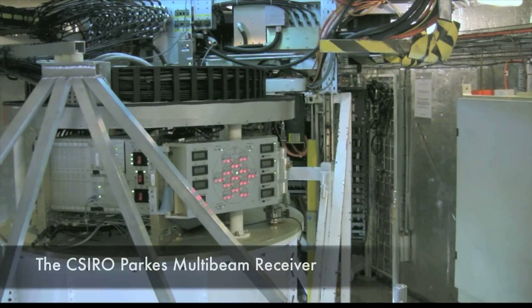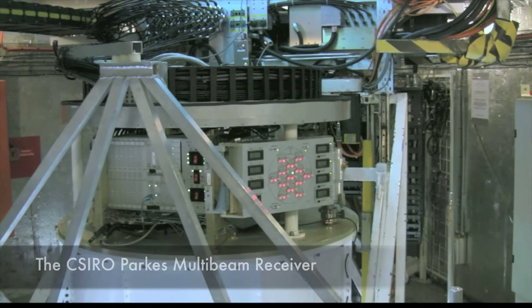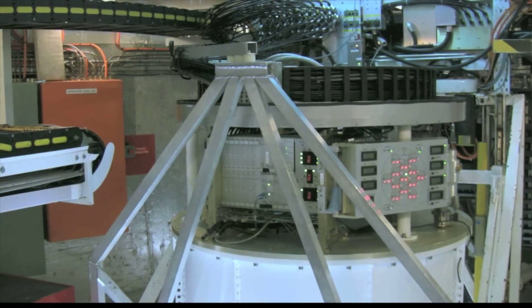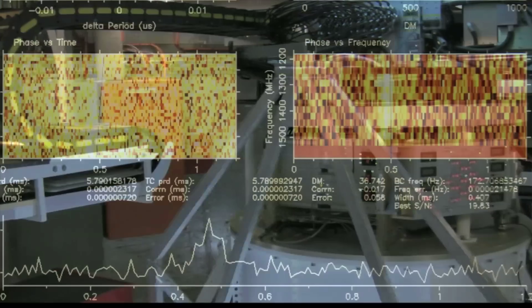In the focus is housed a very special receiver called the Parkes multibeam receiver and we digitize the minute voltages induced by the pulsars 800 million times a second.